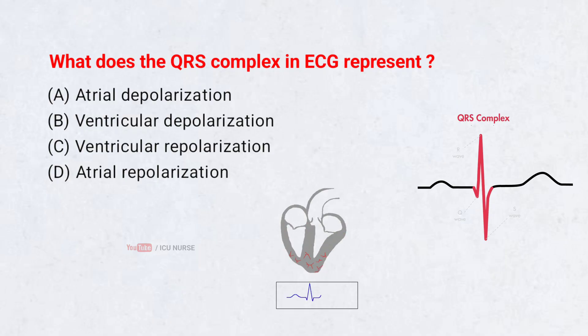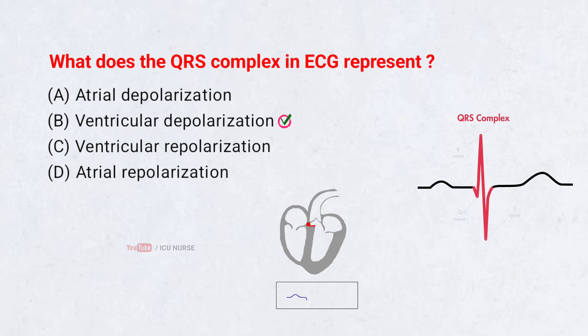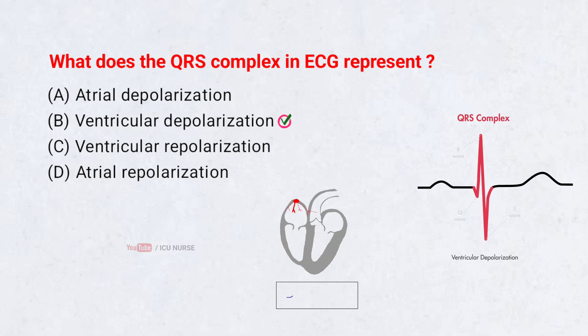What does the QRS complex in an ECG represent? Correct answer B: Ventricular depolarization.